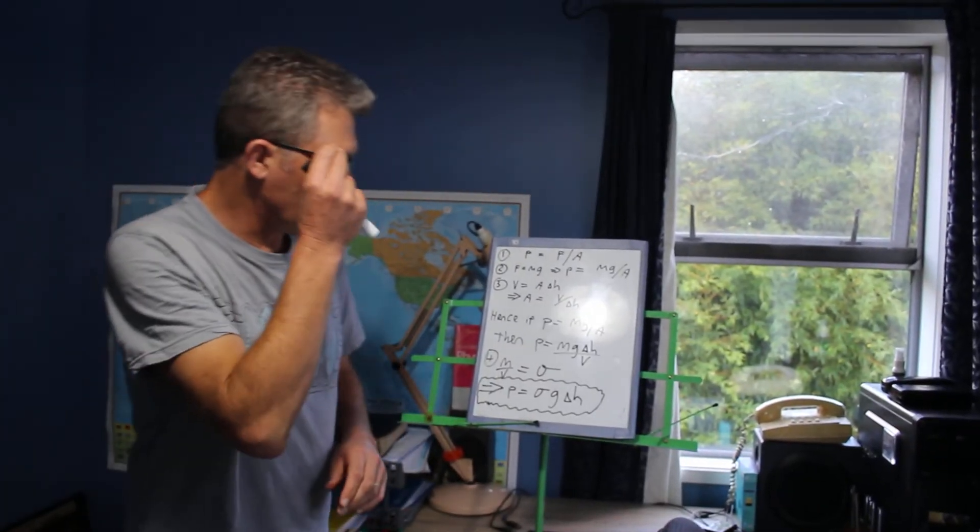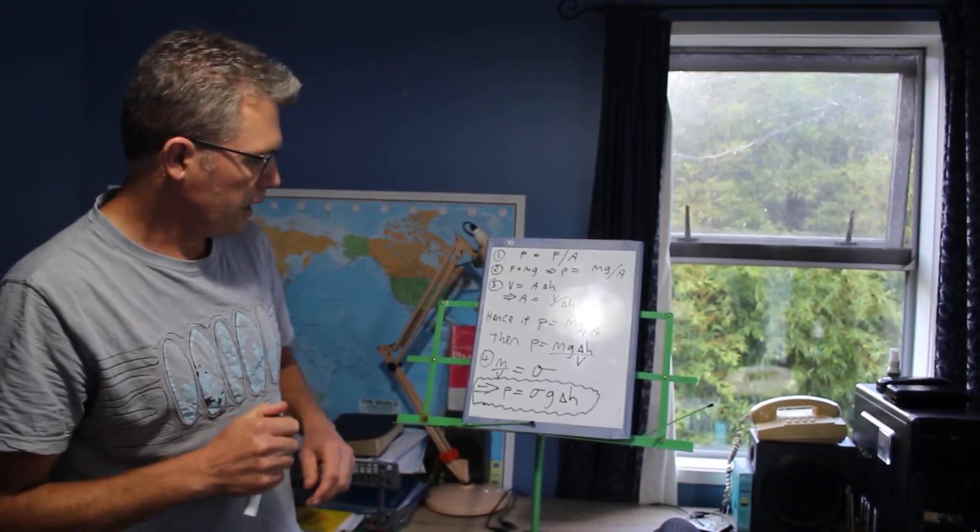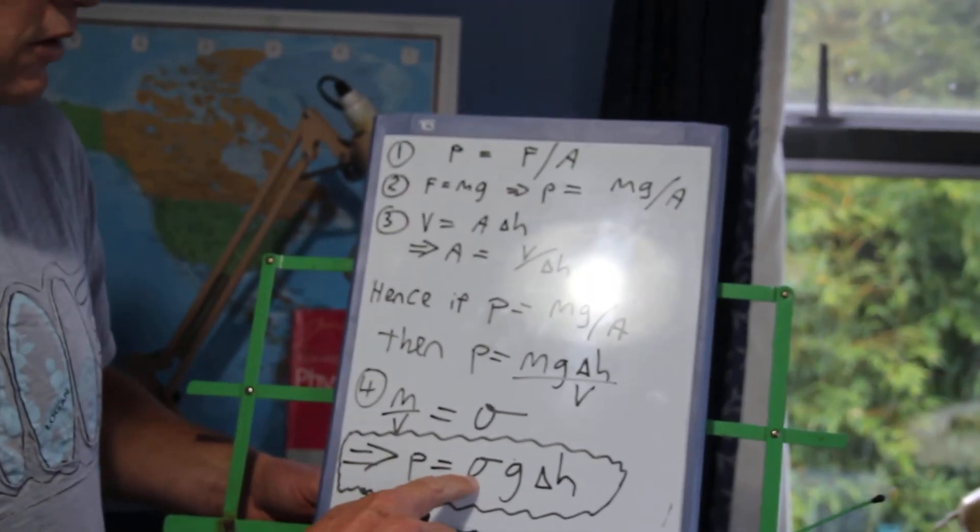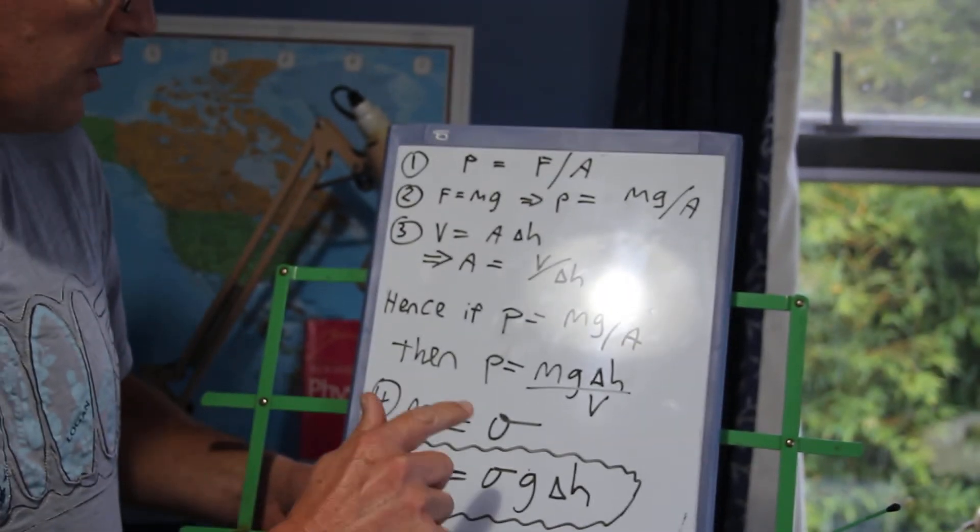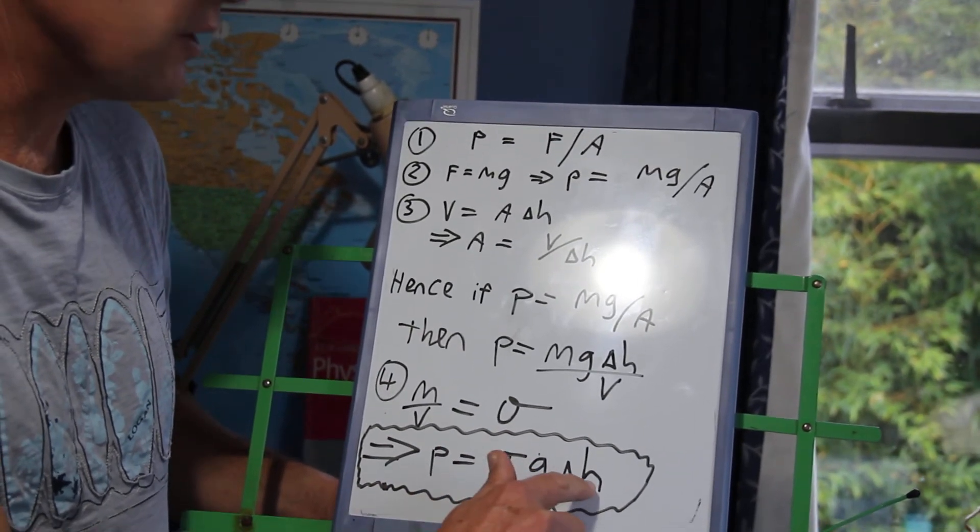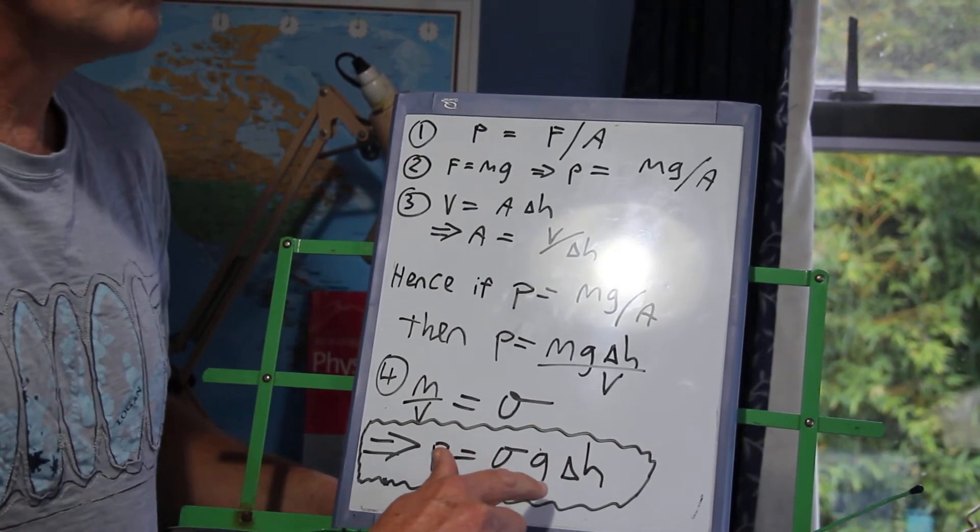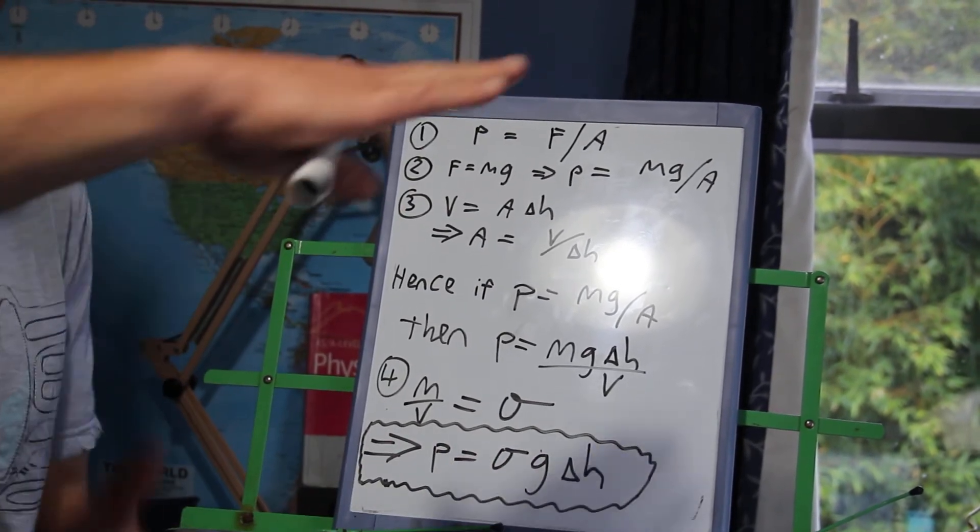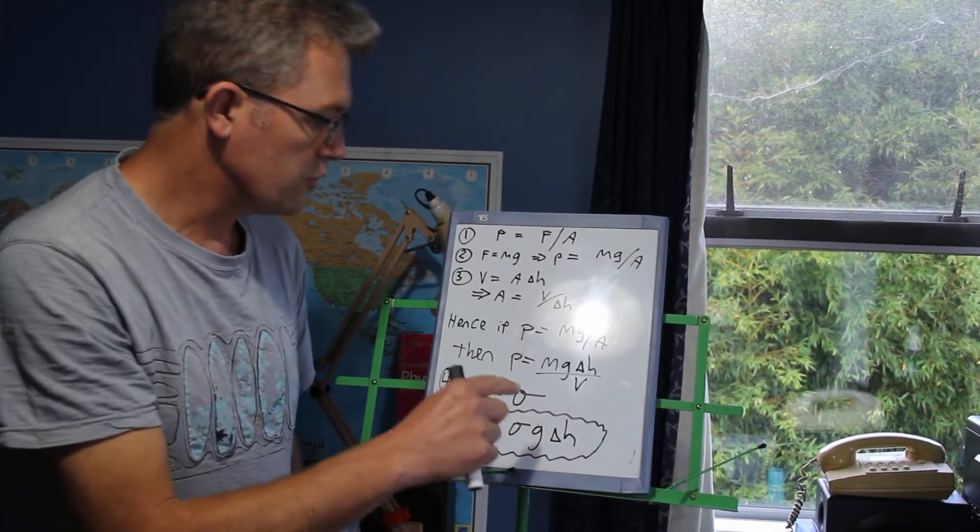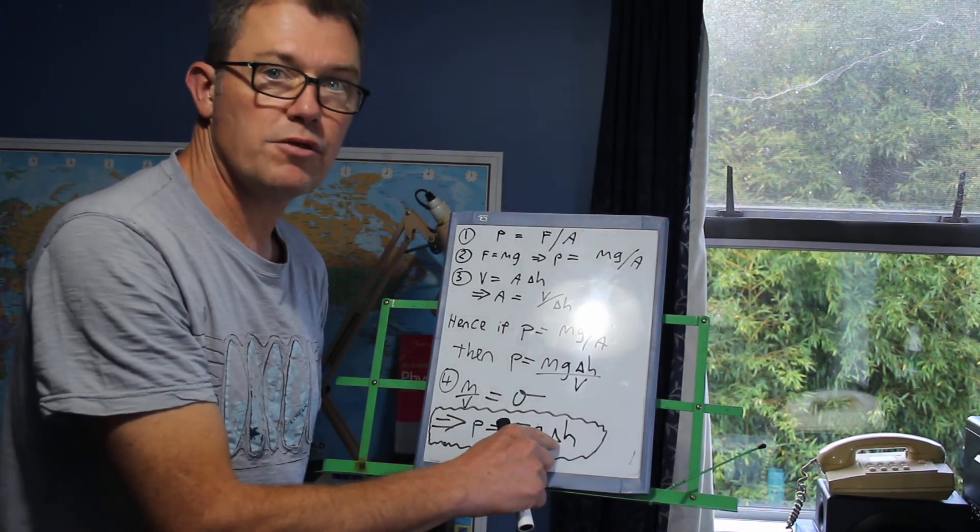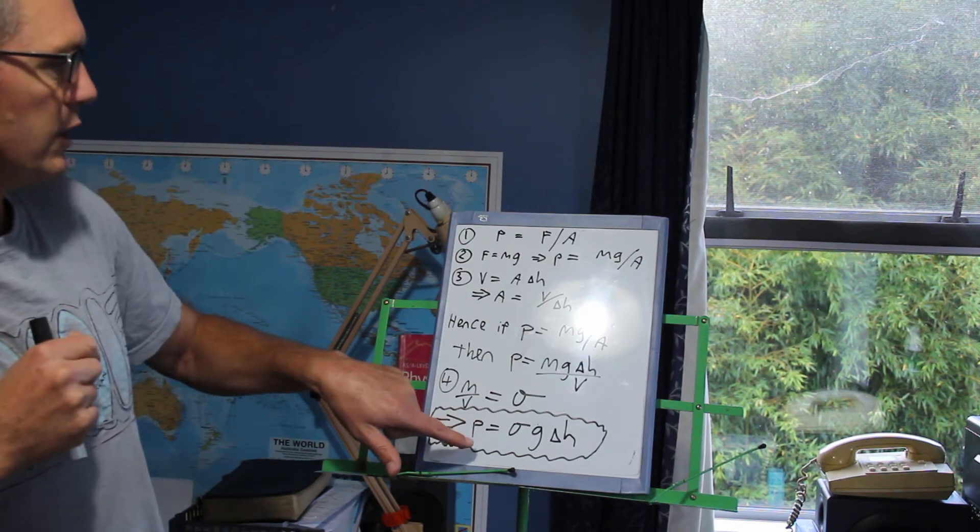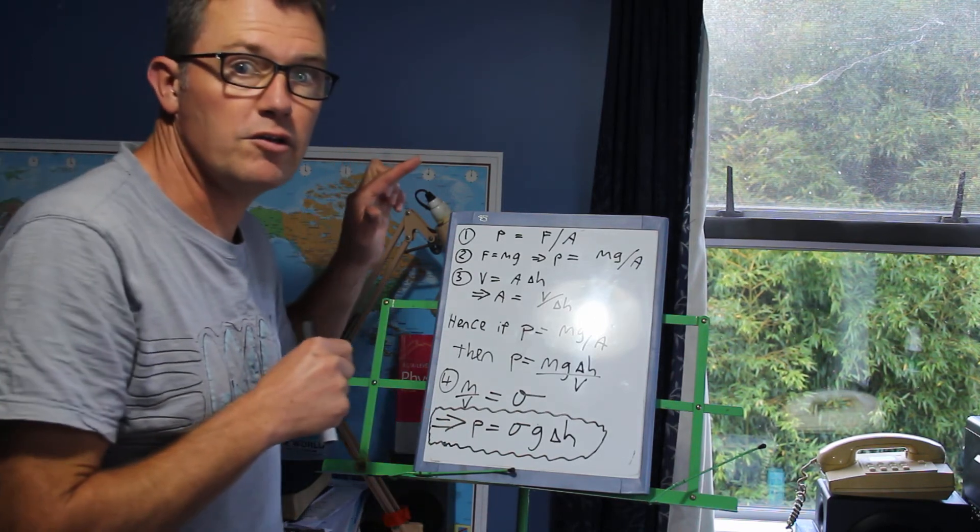So there is an equation for pressure at a certain depth. And it's this pressure equals density of the fluid, often water, but it can be another fluid. Pressure equals density times G, gravity, 9.81 times delta H. Now delta H, I know H is for height, but we're thinking about height in a negative sense. It's depth and it's below the surface. So pressure equals density of the fluid times gravity times the change in depth from the surface level down to whatever depth you're at. So how do we get to this equation? Because you need to know this. You need to know how to derive it.